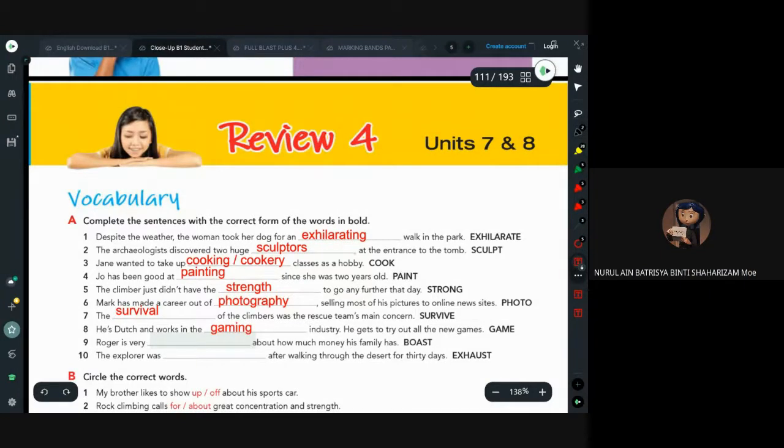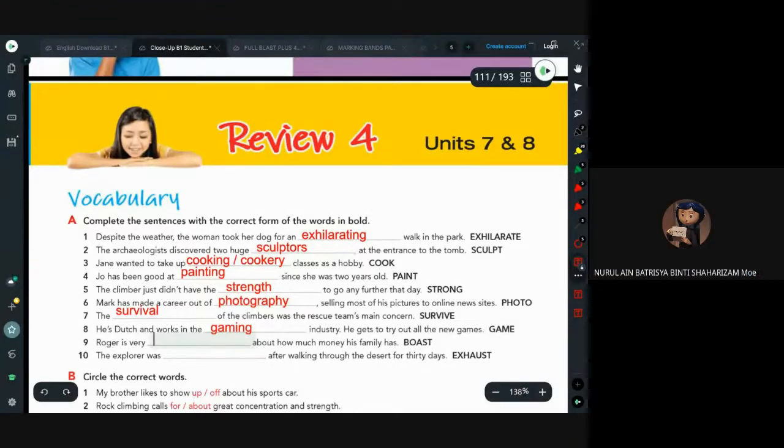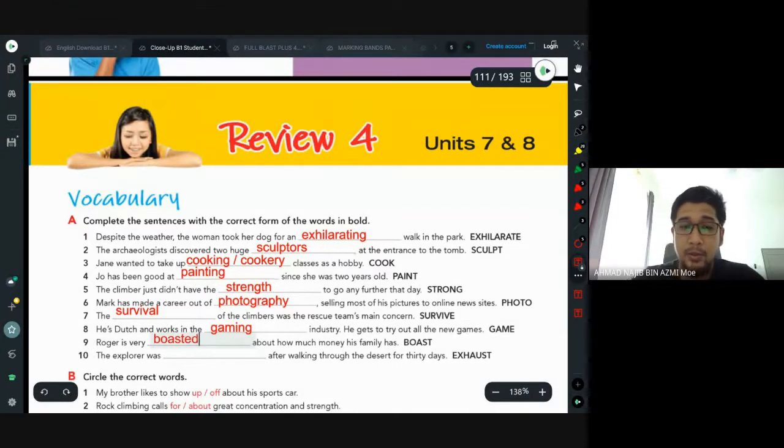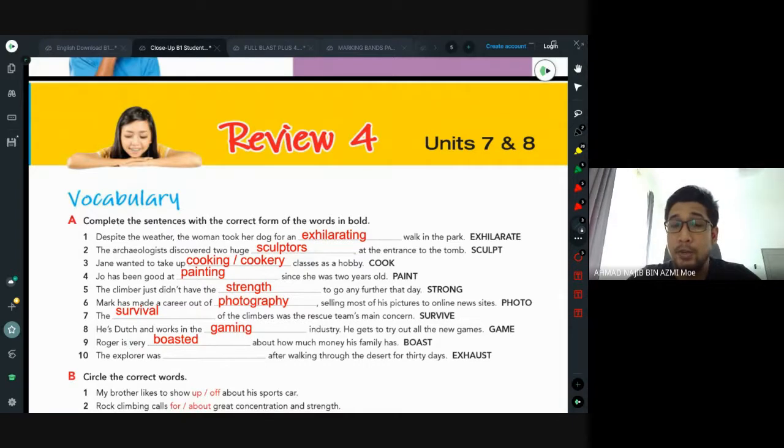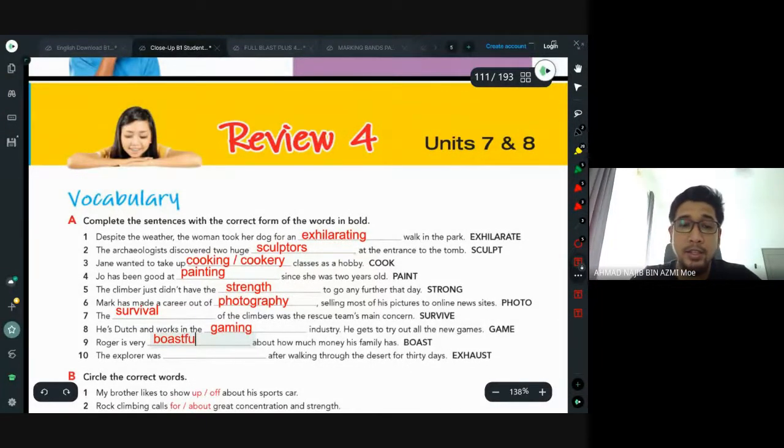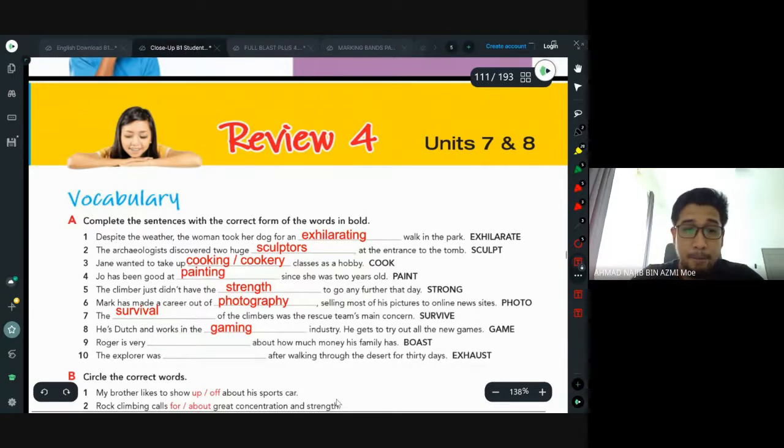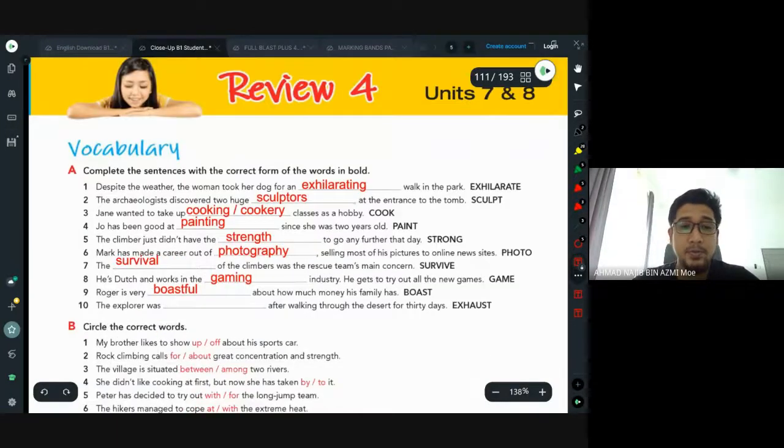Number nine: Roger is very posted about how much money... You cannot use boasted here. If you remove 'very' then you can use boasted, but because 'very' is there, boasted is a verb and you cannot use 'very' with a verb. The correct answer is boastful. Very boleh guna dengan adjective sahaja, tak boleh guna dengan verb.